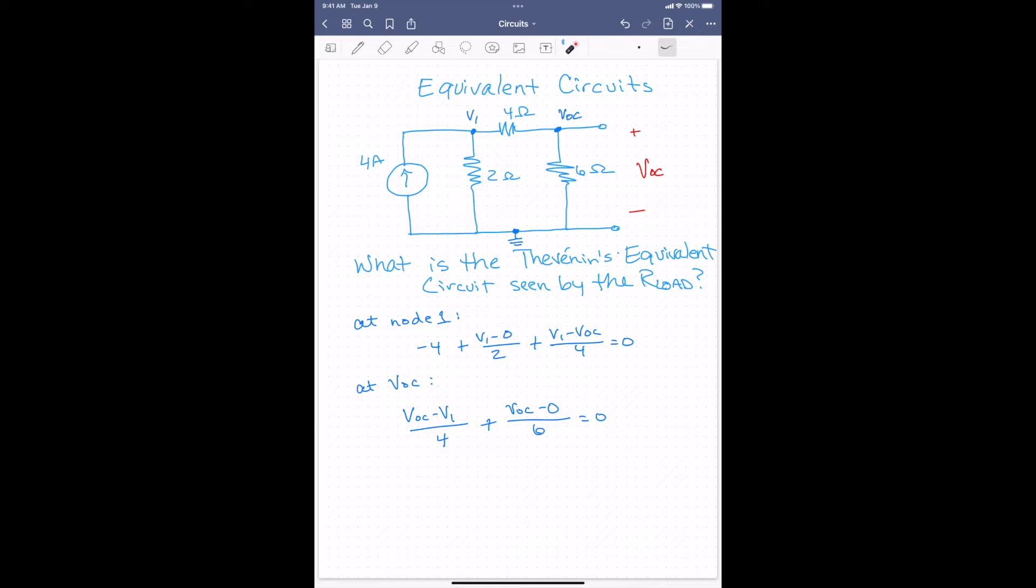Let me go ahead and show you what would happen if we did the same thing and used mesh analysis instead, because I often get the question from students, why do you do one instead of the other? So if we wanted to use mesh analysis instead, we would have two loops. We have this loop here and this loop here. So on the surface, it appears that we have two equations. I'll call this I1, I'll call this I2. So it appears that we have two equations, but we can tell pretty quickly that I1 is actually equal to 4 amps.